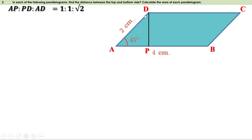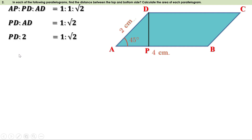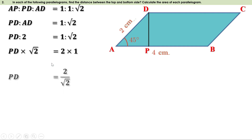PD is the distance between the top and bottom sides, so we have to find it. We know AD is 2 centimeters, so let us take the ratio between PD and AD, which is equal to 1:√2. That is PD:AD = 1:√2. Replacing AD by 2, we get PD:2 = 1:√2. Now PD × √2 = 2 × 1 = 2. To find PD, let us take √2 to the other side.